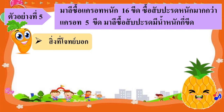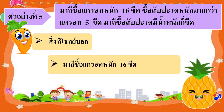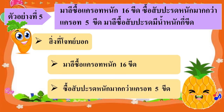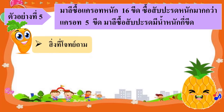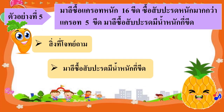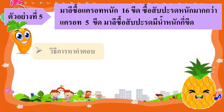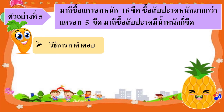จากโจทย์ในข้อนี้นะคะ สิ่งที่โจทย์บอกคือ มารีซื้อแครอทหนัก 16 ขีด และซื้อสับปะรดหนักมากกว่าแครอท 5 ขีด สิ่งที่โจทย์ถามคือ มารีซื้อสับปะรดมีน้ำหนักกี่ขีด วิธีการหาคำตอบ เนื่องจากมารีซื้อสับปะรดหนักมากกว่าแครอท ดังนั้นจึงใช้วิธีการบวก